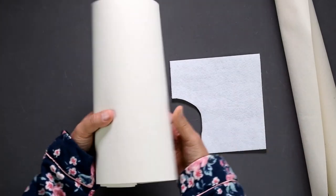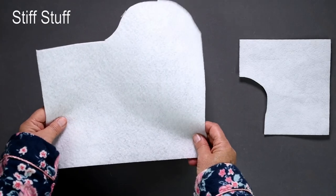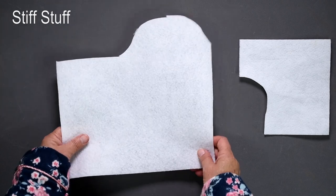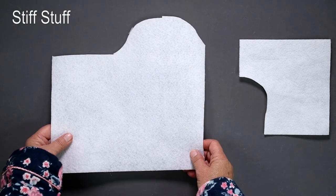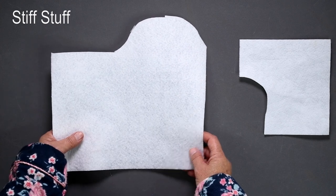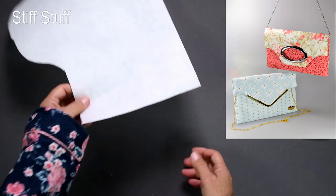Stiff Stuff. The Stiff Stuff is non-fusible yet it's firm and flexible and in some ways it's very similar to the Peltex yet in the best possible way it's different. It does not tend to wrinkle and crease like Peltex does. You can crumple it and squish it and your bag will bounce back looking as good as new.